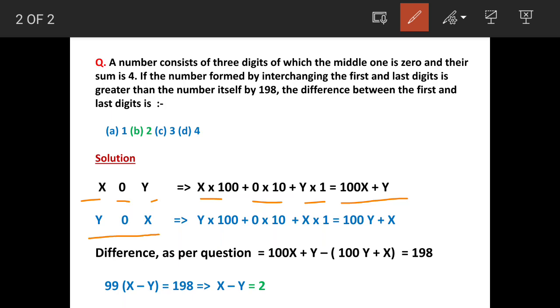And when we do similar multiplications of 100, 10th, and unit place, the number becomes 100y plus x. So as per question, when we subtract the initial number with the number obtained by interchanging the digits, the difference is 198. So when we simplify this, we get difference as x minus y is equal to 2.